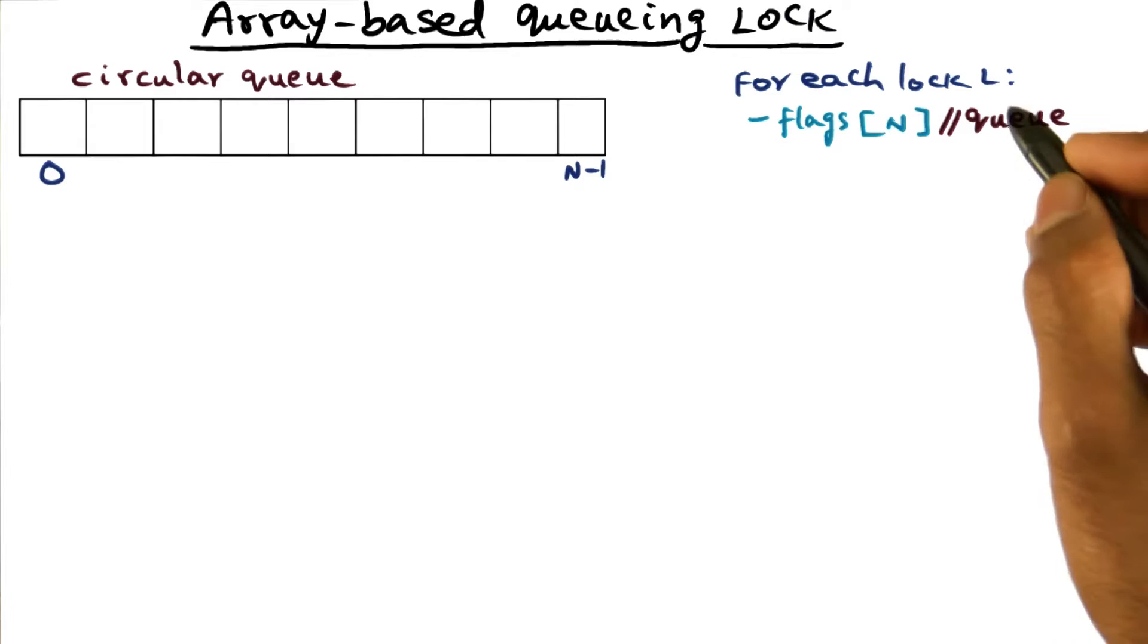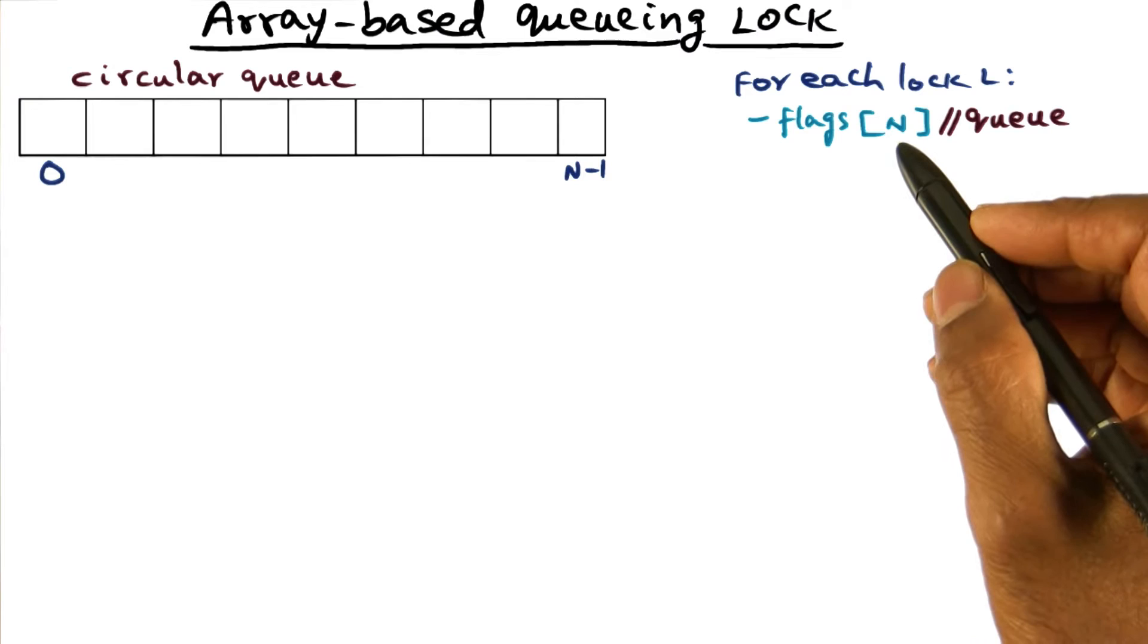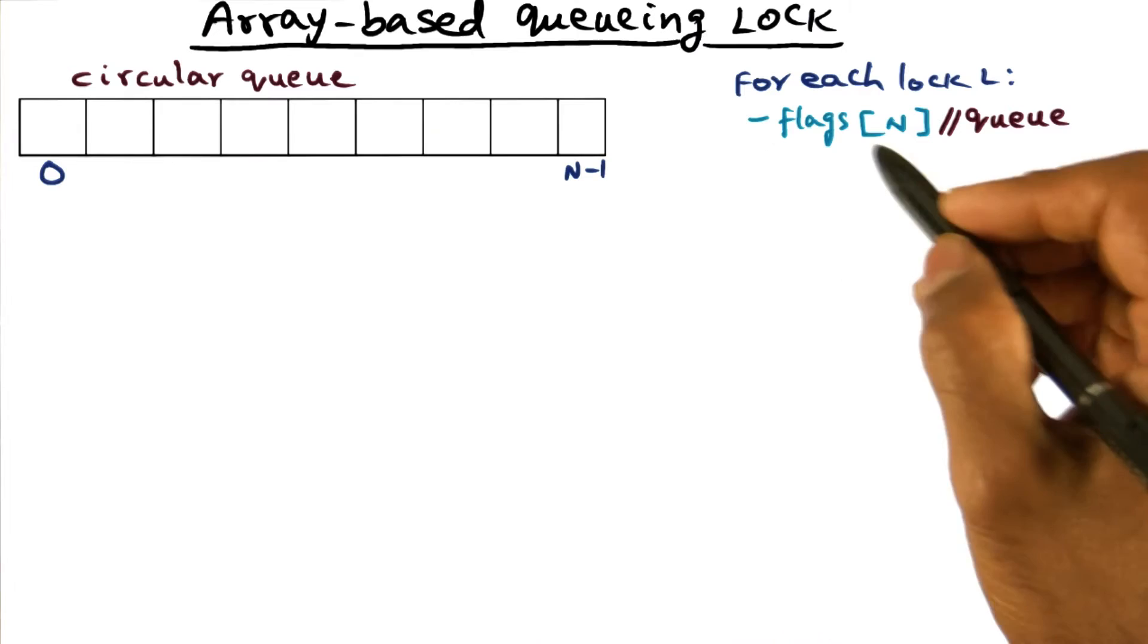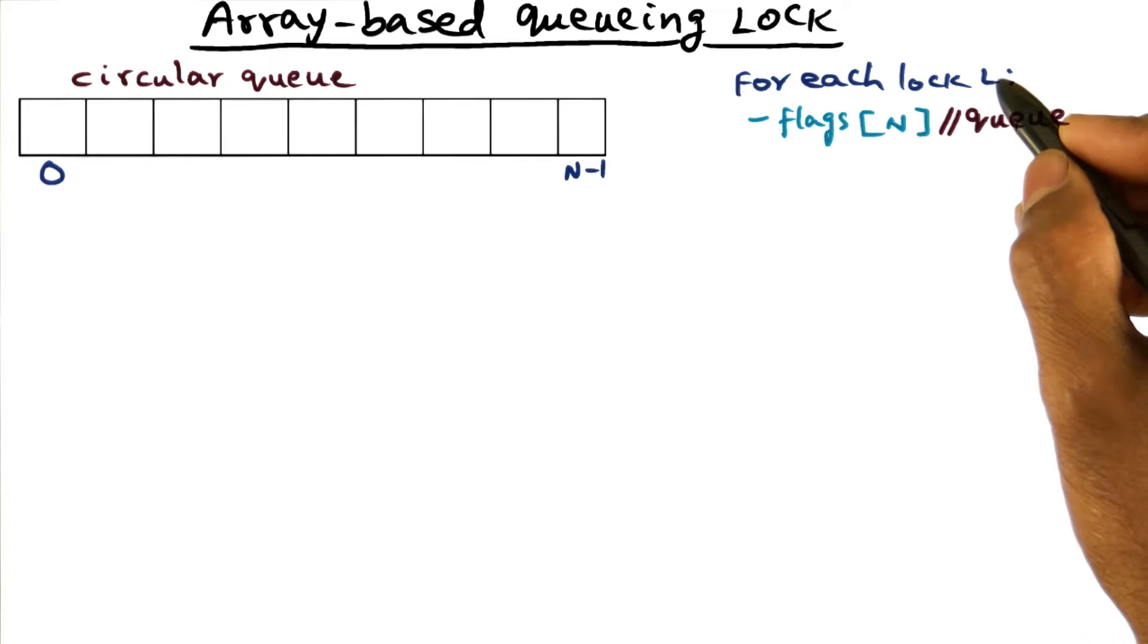Associated with each lock L is an array of flags. The size of this array is equal to the number of processes in the SMP. So if you have an n-way multiprocessor, then you have n elements in the circular flags array. This flags array serves as a circular queue for enqueuing the requesters that are requesting this particular lock L. So every lock has associated with it this flags array.